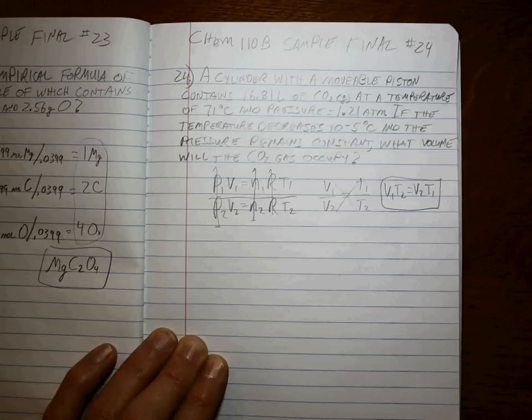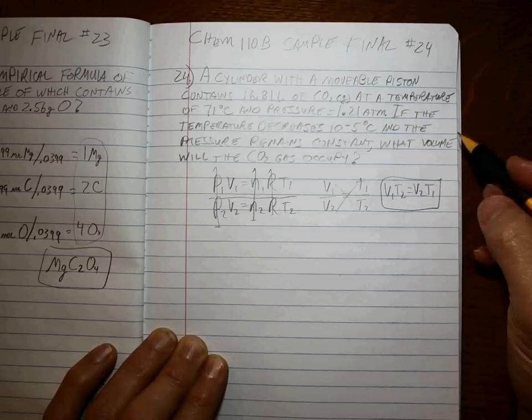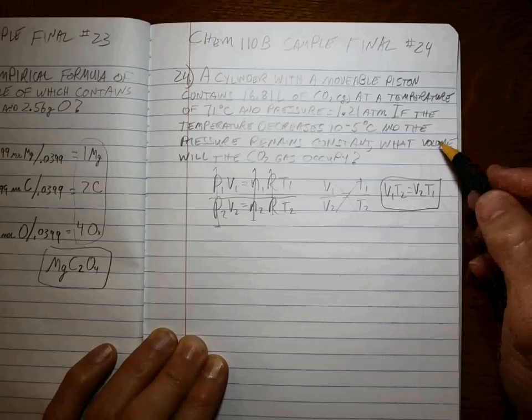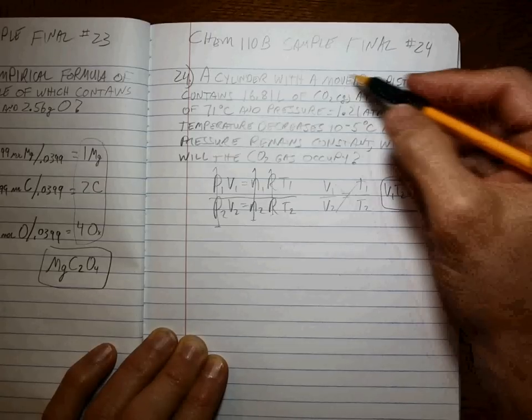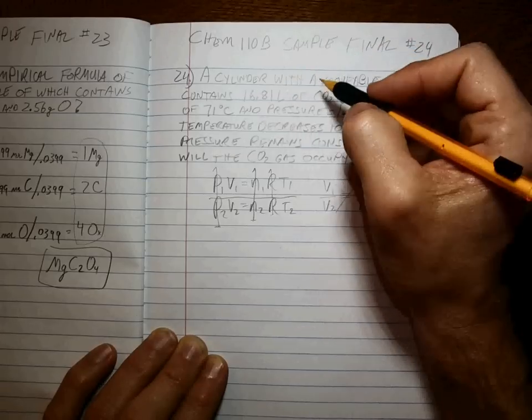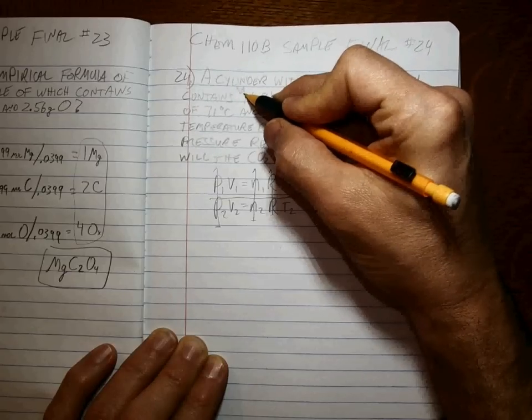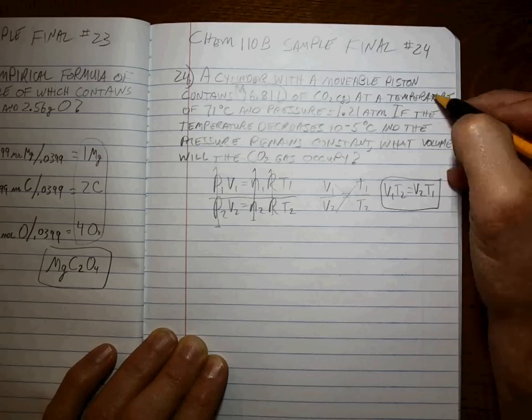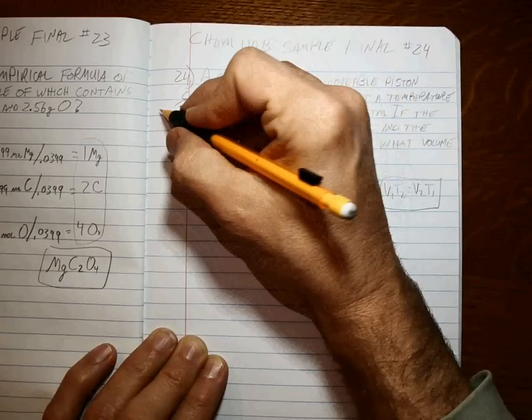Okay, so now we have to identify what everything is up there so that we know what goes with what. Cylinder with a movable piston contains 16.81 liter. So that's what we're going to call V1, okay? Temperature of 71 degrees C. That's going to be T1.